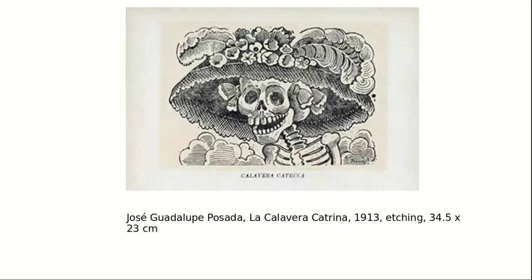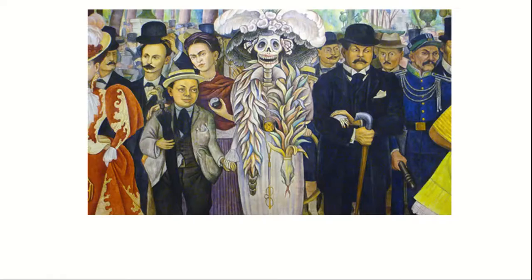Calavera Catrina, made famous by printmaker José Guadalupe Posada, is a really famous Day of the Dead type figure that shows up throughout Mexican pop culture — an important icon for Mexican identity. So Diego being right next to her showcases his Mexican pride and represents him joining this quintessential symbol of Mexican pop culture.